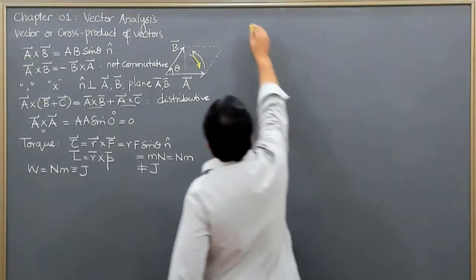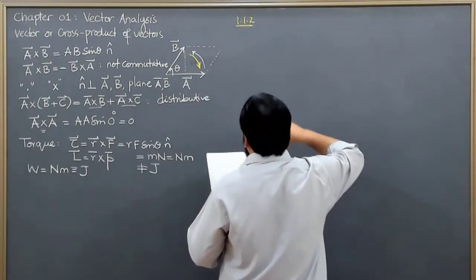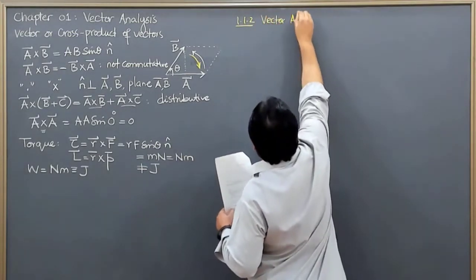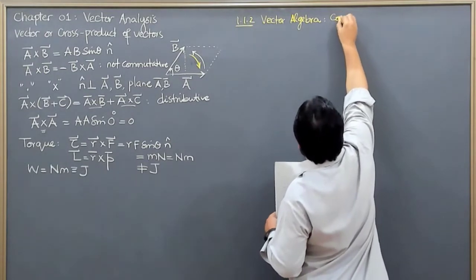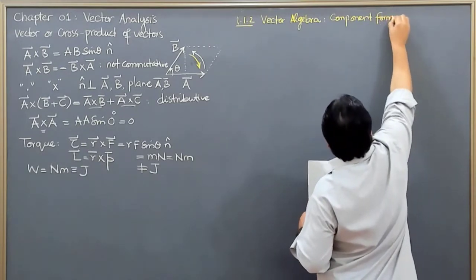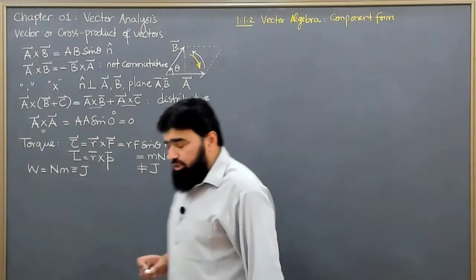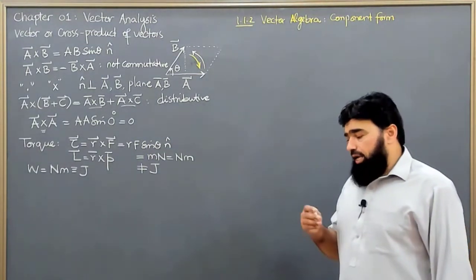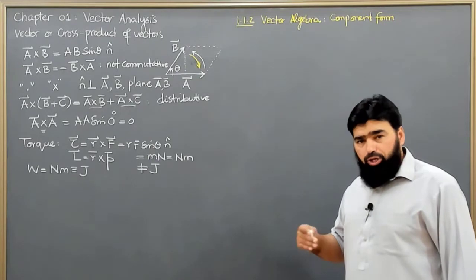We will start with section 1.2, which is vector algebra, specifically on the component form of a vector. We know that when we consider space, it is a three-dimensional space — we have the x-dimension, the y-dimension, and the z-dimension, like length, width, and height.